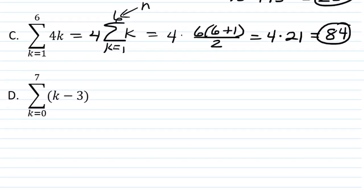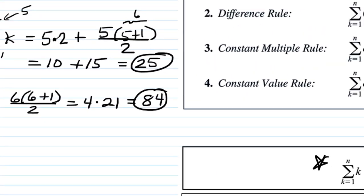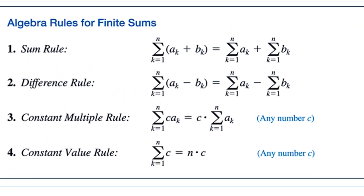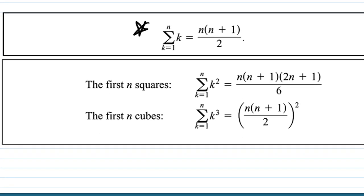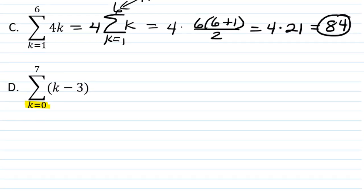So now let's look at D. k equals 0 to 7 of k minus 3. So be careful here. In all of our rules, as we have them written, we are starting the index at the lower limit of 1, and here we have a lower limit of 0.